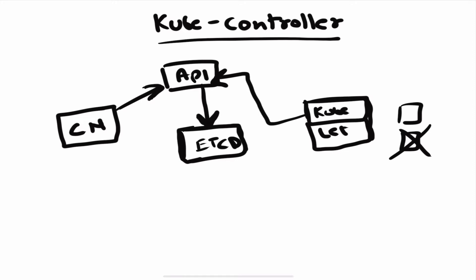When a pod goes down, the kubelet informs the API server. The first thing the API server does is store or update that information into etcd. Since no other component talks directly to etcd apart from the API server, the controller manager talks to the API server to get the current state from etcd. It sees that a pod has gone down and then tries to respawn another pod. That's basically how the controller manager works.